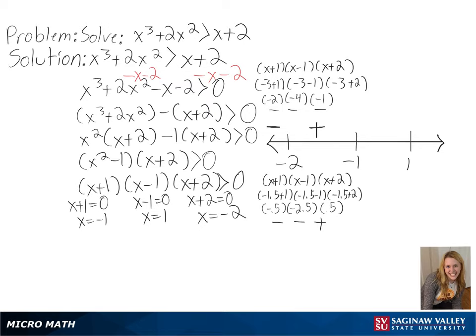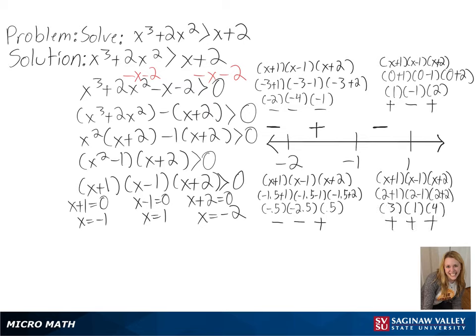A number we can use in between negative 1 and 1 is 0. And plugging this into our expression, we get a negative number. Finally, a number we can use to the right of 1 is 2. And plugging this into our expression, we get a positive number.